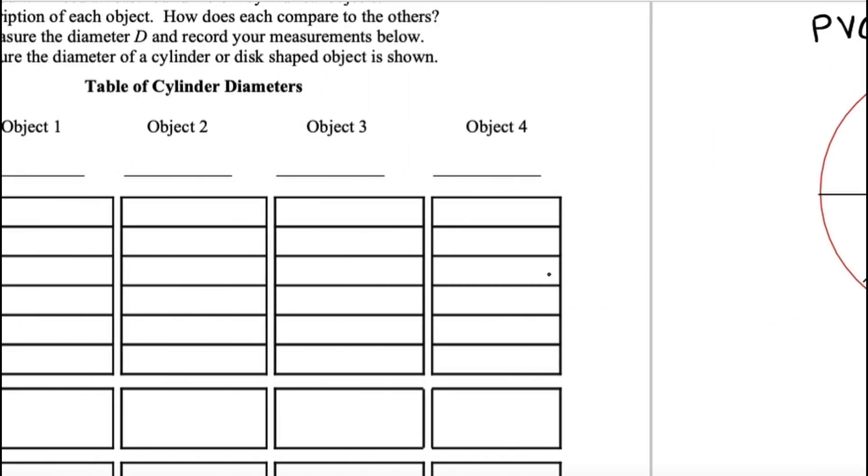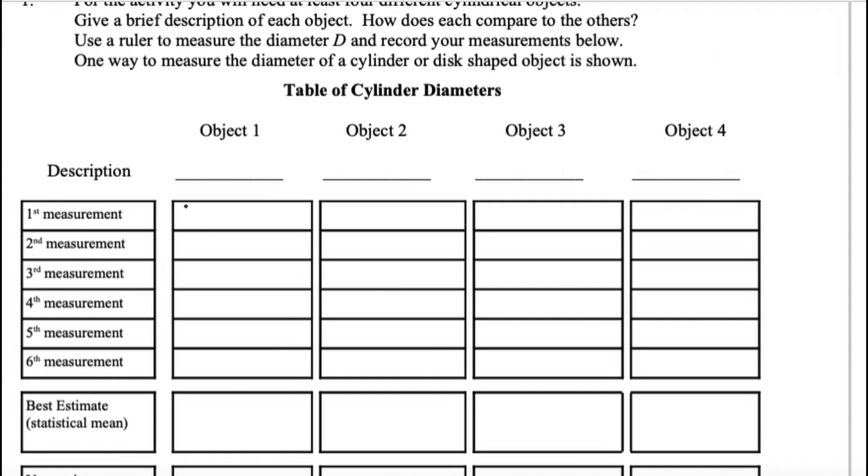So make six measurements on each object and then record them in your data table. That's what the spaces here are for. So you could put your D1 here for the PVC. And then D2 could go here. And D3. So I have some sample data actually that I measured. So here was my results. I got 2.67 centimeters.